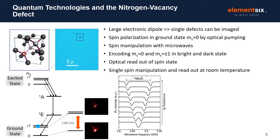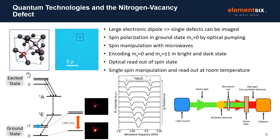Applying a magnetic field splits the plus minus one transition, which can then be used to measure a magnetic field. What is nice about doing these measurements is that the basic setup for any such measurement in practice can be very simple — with a light source, diamond, microwave source and a detector. The simple setup and room temperature operation give great potential for making devices with small size, weight and power requirements.